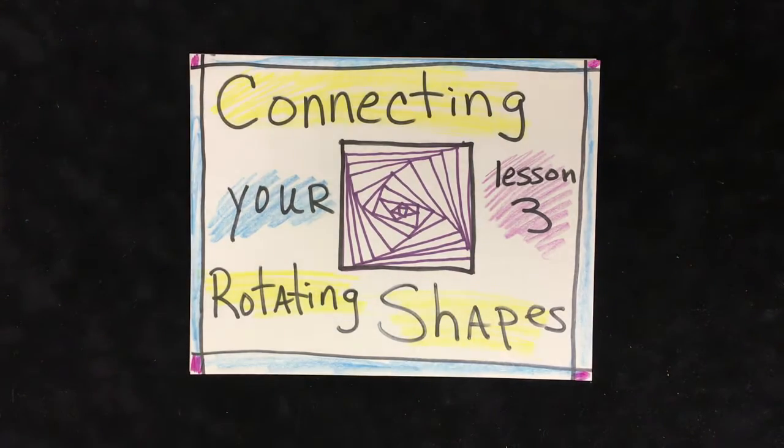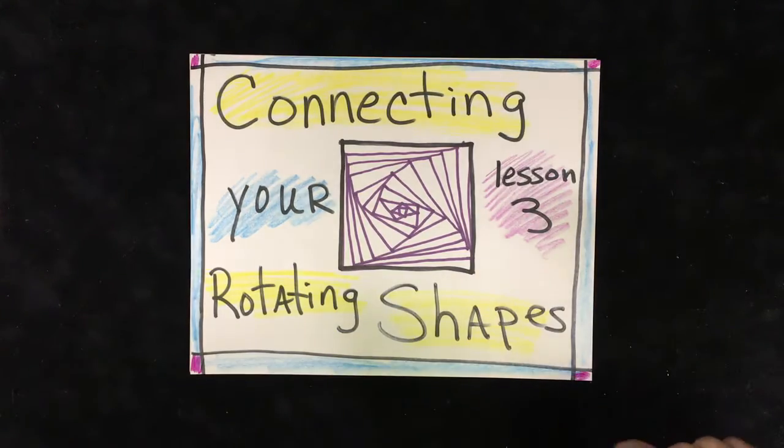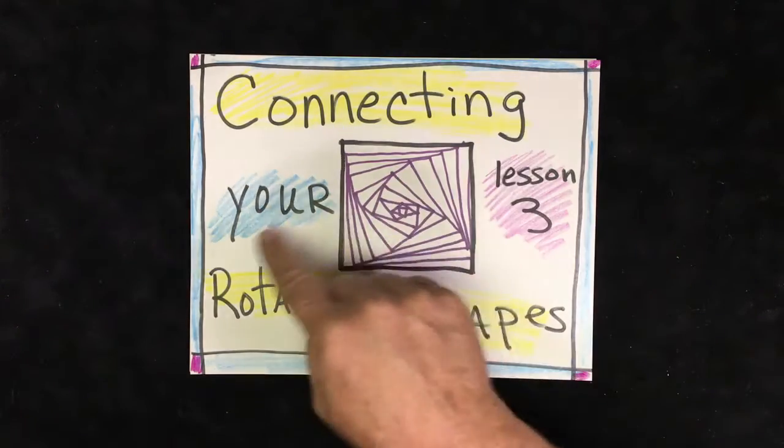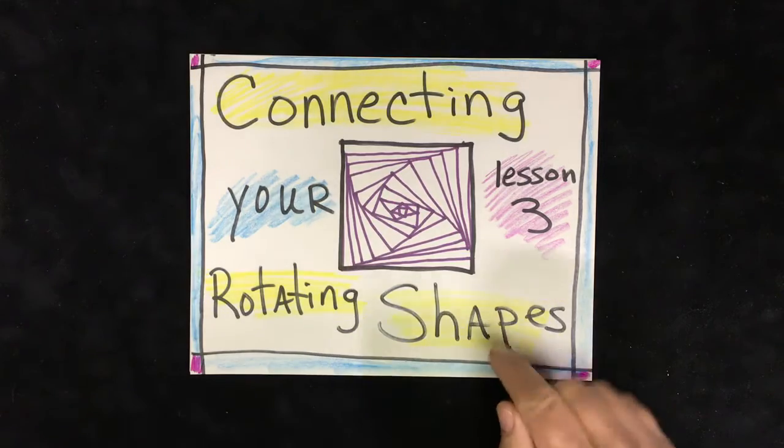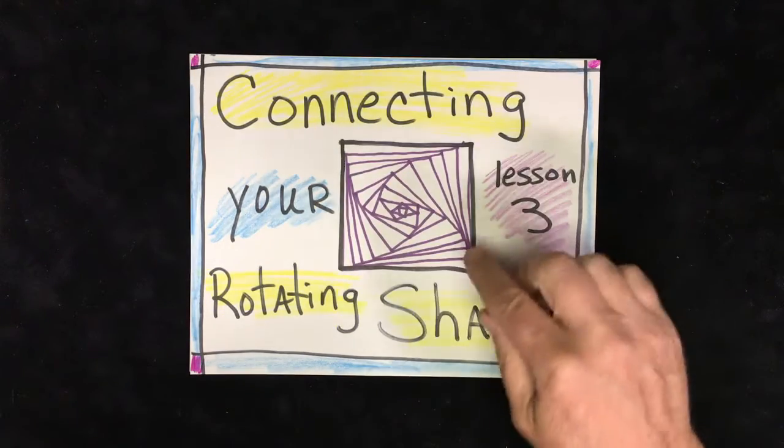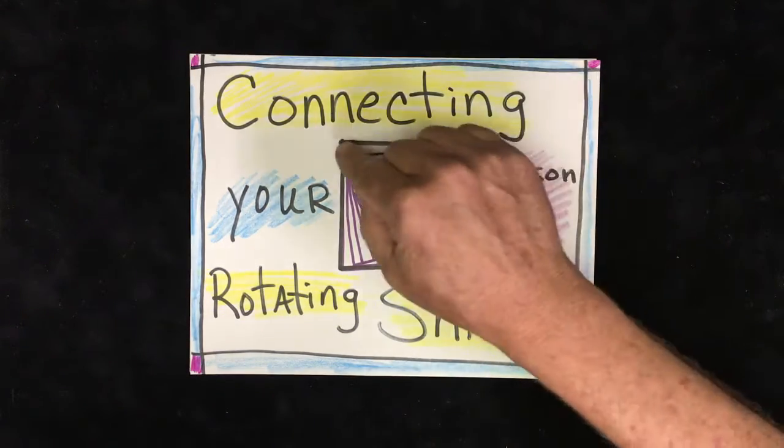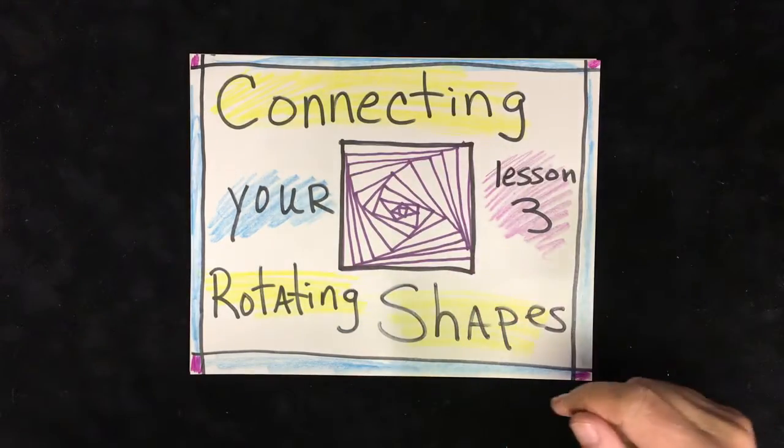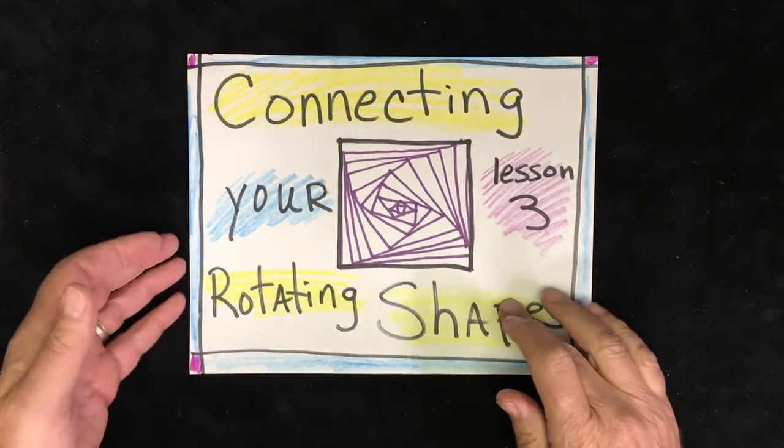All right, hey cool kids, today is lesson three of rotating shapes, and today's lesson is called connecting your rotating shapes. Remember how we started off with a square? We learned how to push a line over just a little bit, and by doing that over and over again it made the shape look like it was rotating.